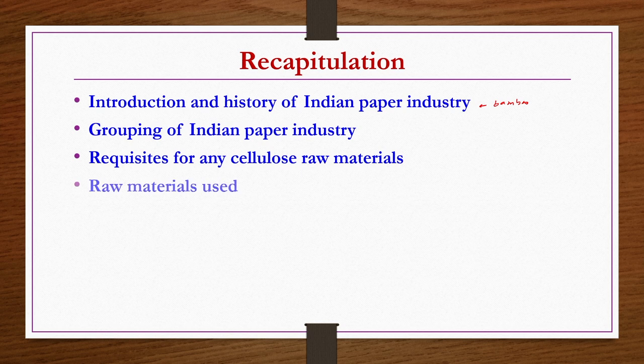We discussed different types of raw materials required for the pulp and paper industries, like softwoods, different types of grass, reeds and straws, and other such materials used in pulp and paper industries.